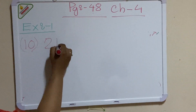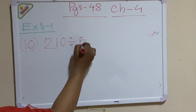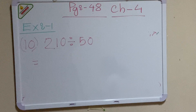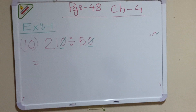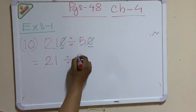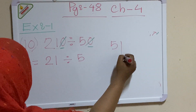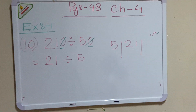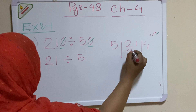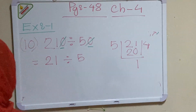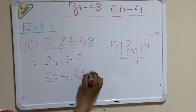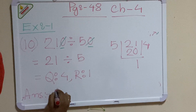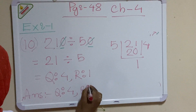Number 10 is 210 divided by 50. In the dividend there is one zero and in the divisor there is one zero. Cut these zeros, and the remaining numbers are 21 divided by 5. In the table of 5: 5×4=20, and the remainder is 1. So the answer is quotient 4, remainder 1.